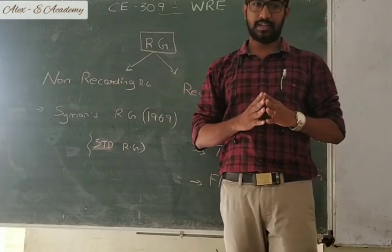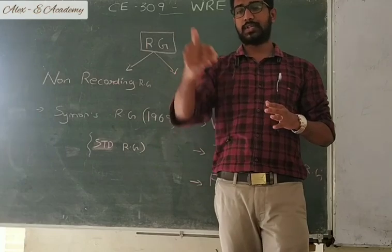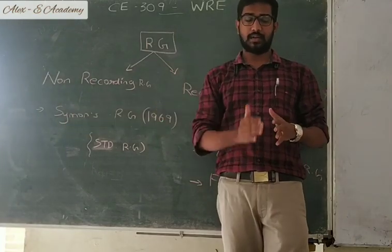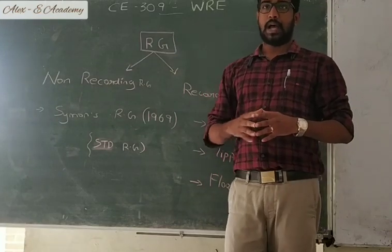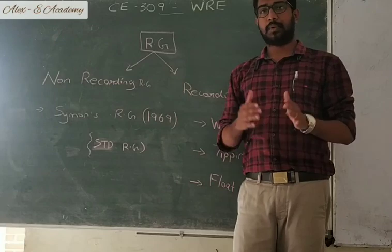The distance between the rain gauge and the nearest object should be at least 2 times the height of the object. It will be free from the site level and the range is fixed at 2 times.